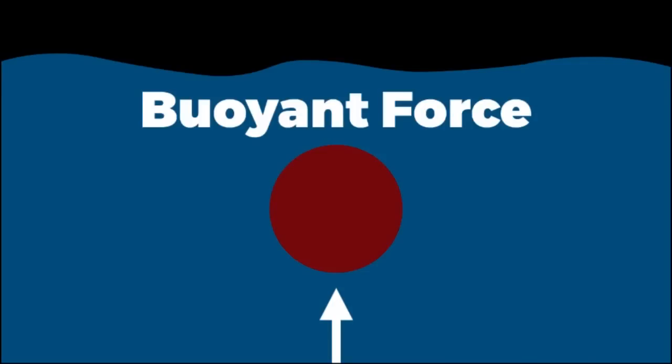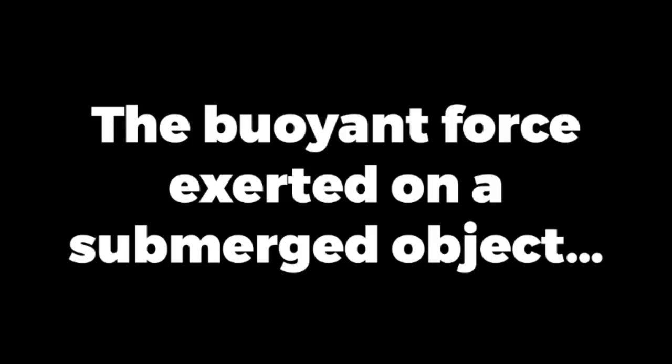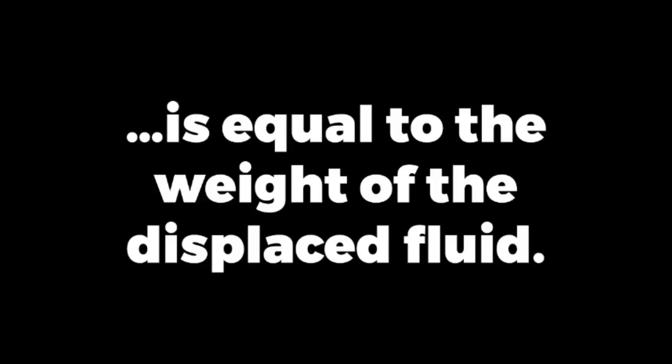Now there's a special technique we can use when we want to calculate the buoyant force that is acting on an object. That is called Archimedes Principle. Archimedes Principle states that the buoyant force exerted on a submerged object in a fluid is equal to the weight of the displaced fluid. So we're going to show you quickly how to calculate the buoyant force using Archimedes Principle.